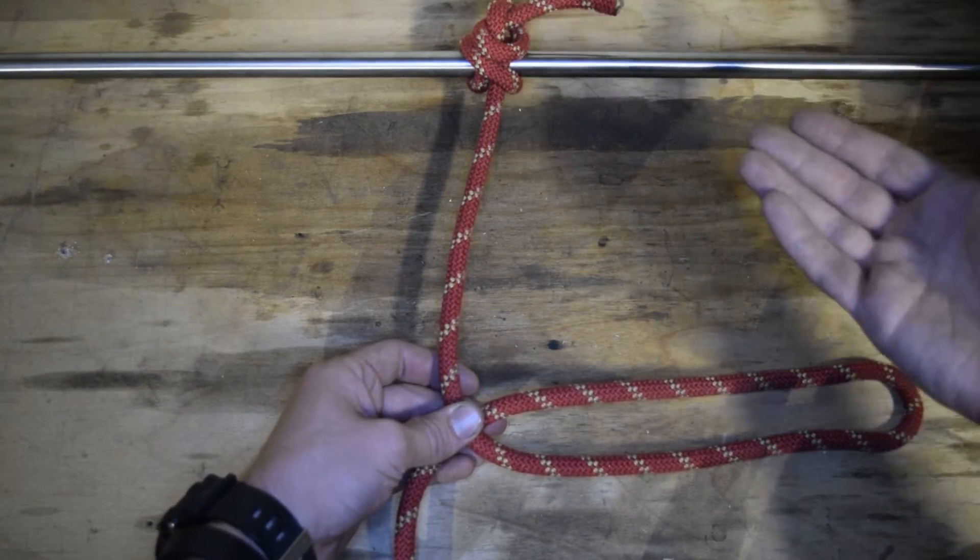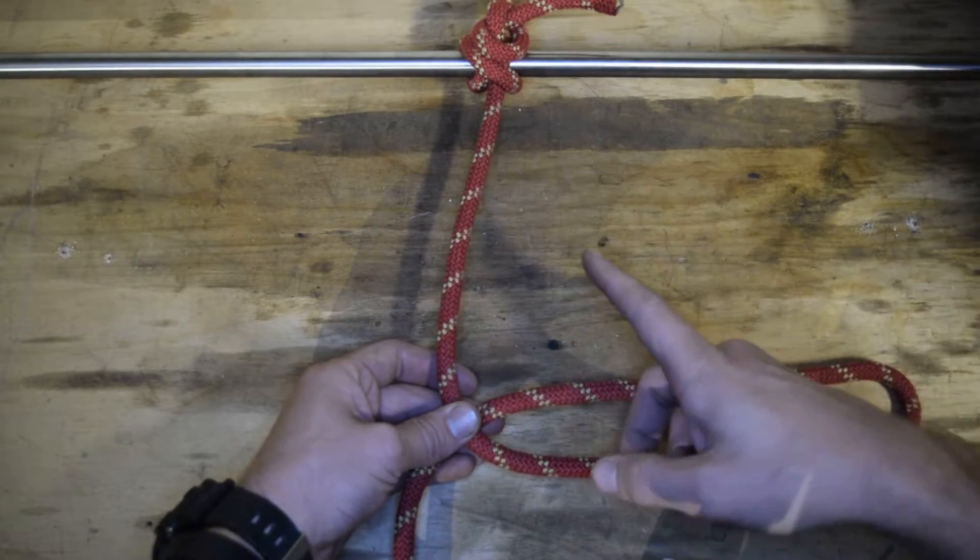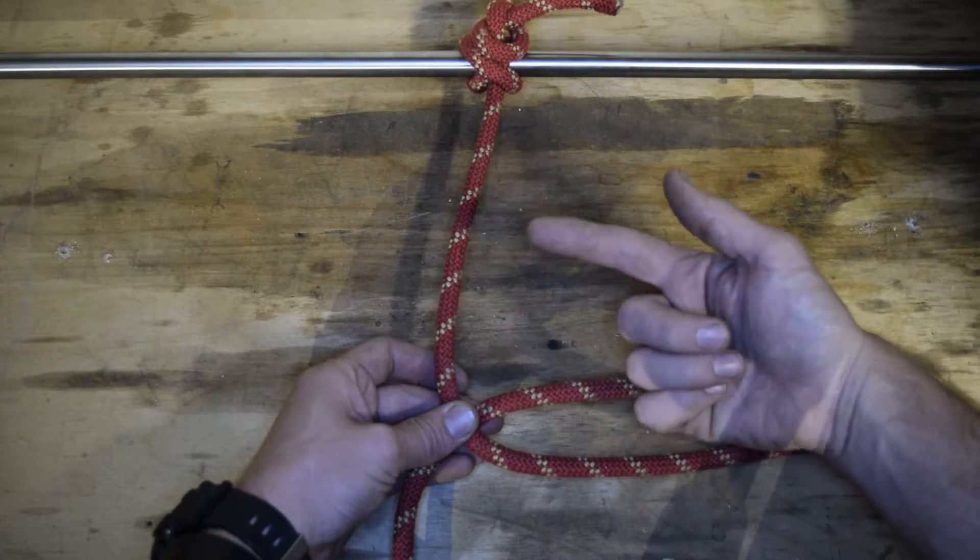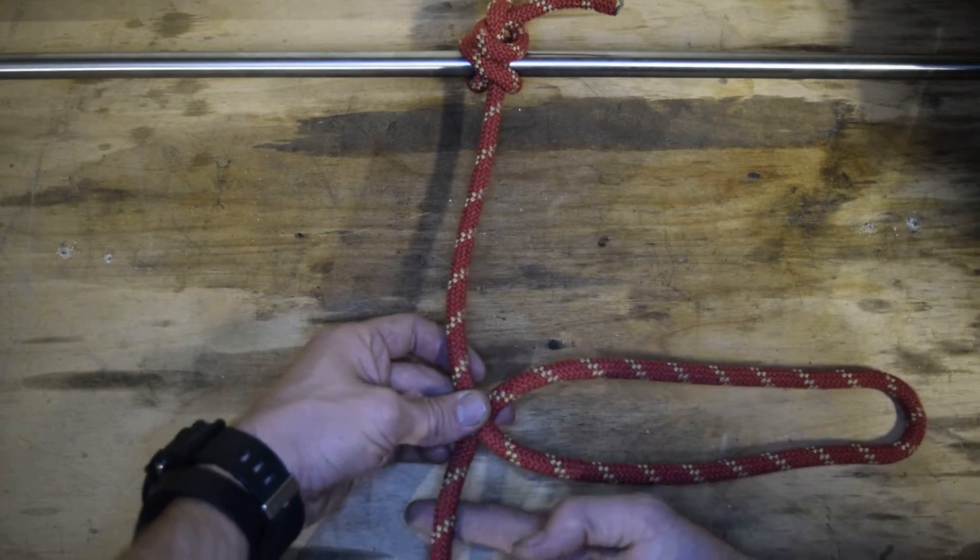When you're creating the inline figure 8, whatever direction you want the 8 to face, you need to tie on the opposite rope. So if you want the 8 to face this way, you have to tie it on this part of the rope. If you want it to face that way, you've got to tie it on this part of the rope.